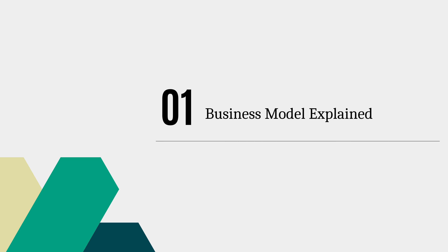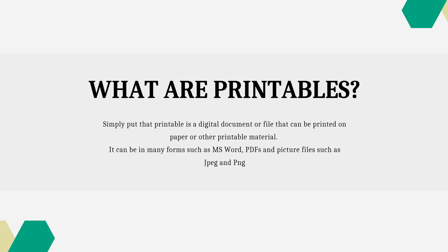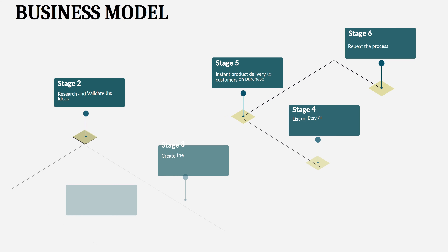Before explaining the business model, it's important to first understand what printables are. Printables are basically digital document files that you could print on paper. They come in several forms like Microsoft Word, PDFs, or picture files such as JPEG and PNG, which you could offer to your customers. Any time you offer those files, customers could print them out themselves.